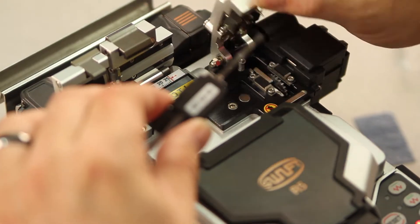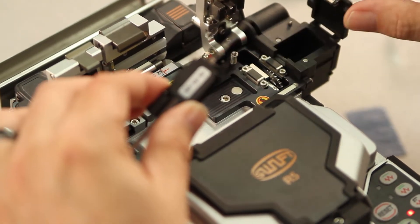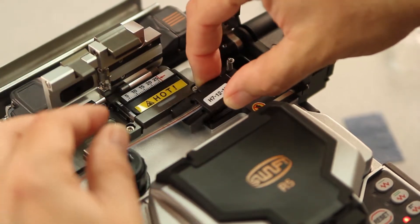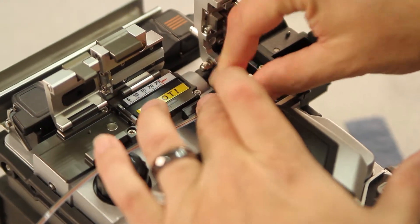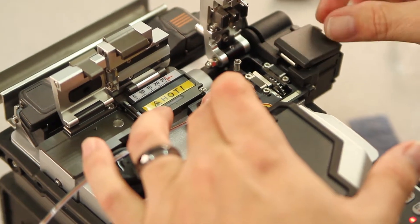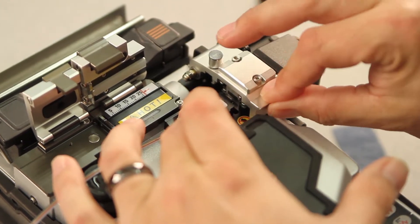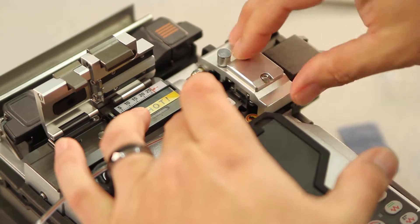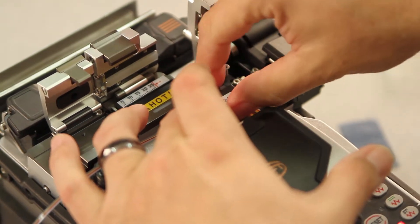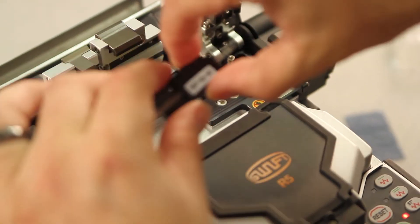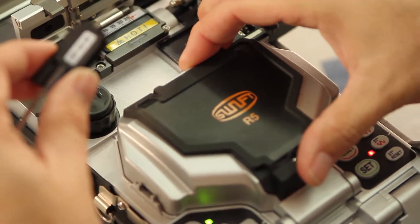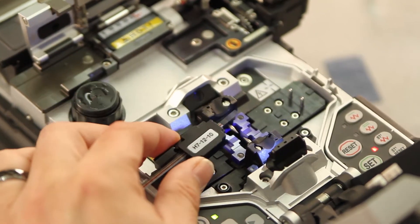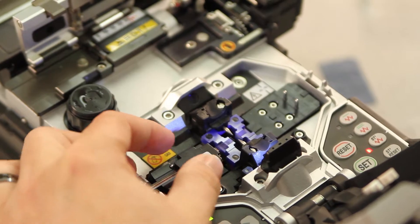Open your cleaver door until it engages. From your trash bin, place your holder inside, pressing firmly forward. Close your trash bin, close your cleaver door to press your button. Again, open your cleaver door until it fully engages. Remove your holder, open your wind cover, and insert your fiber.